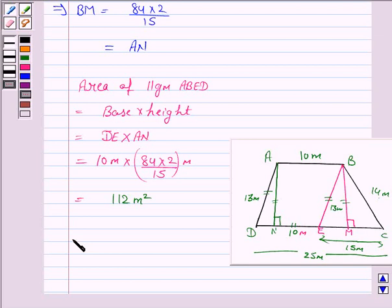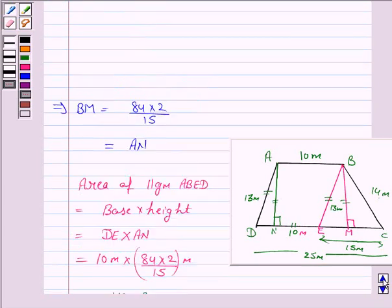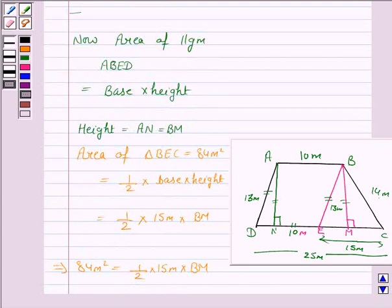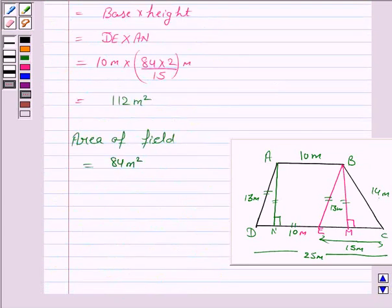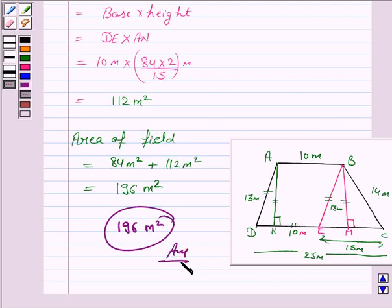So the area of the field is equal to area of triangle BEC, which is 84 meter squared, plus area of parallelogram, which is 112 meter squared. So the total area is 196 meter squared. Hence, the answer is 196 meter squared. So this completes the question. Hope you enjoyed this session. Goodbye and take care.